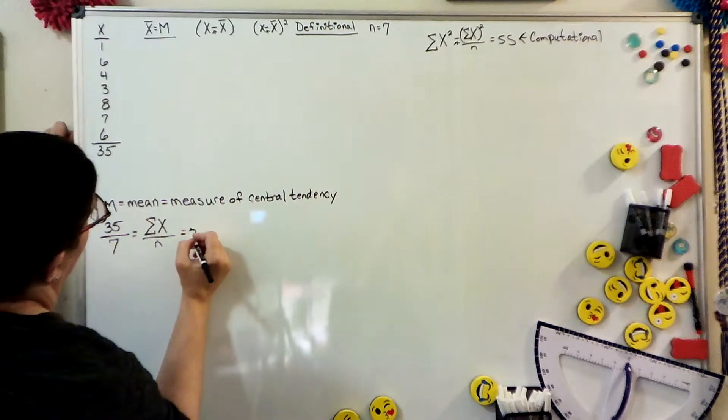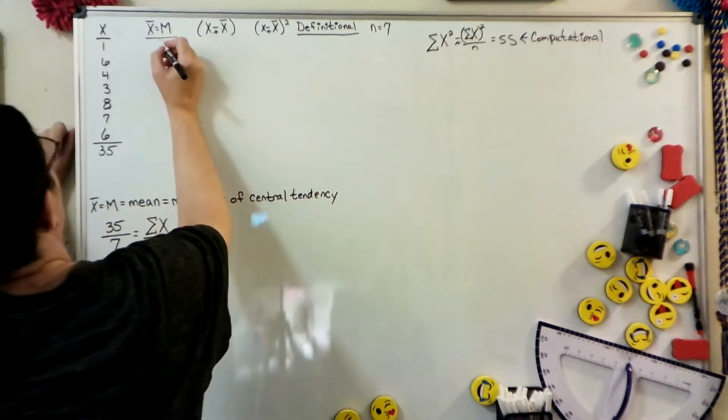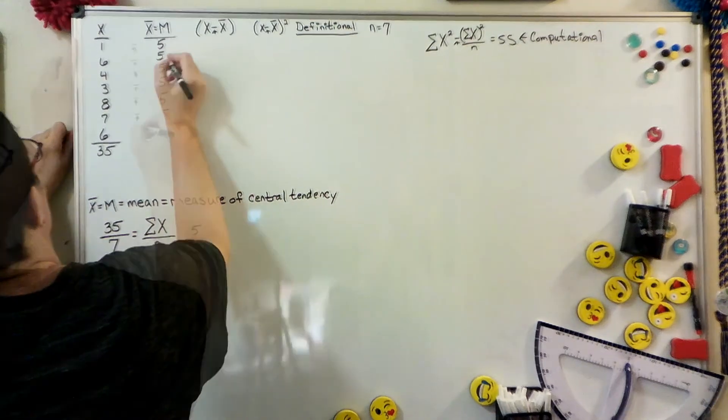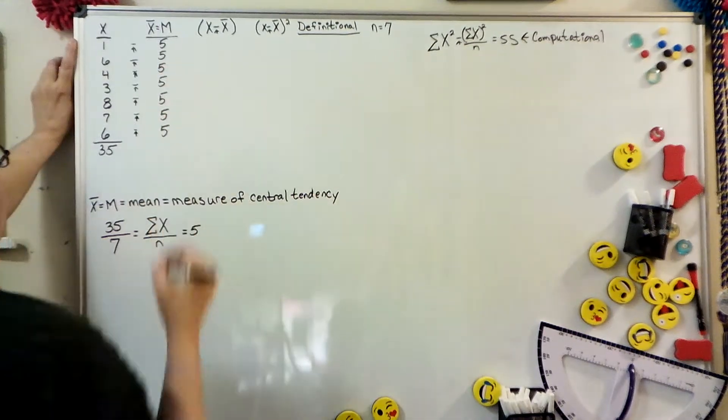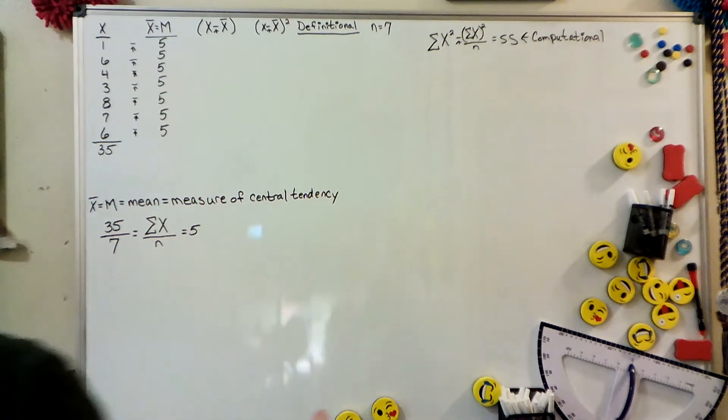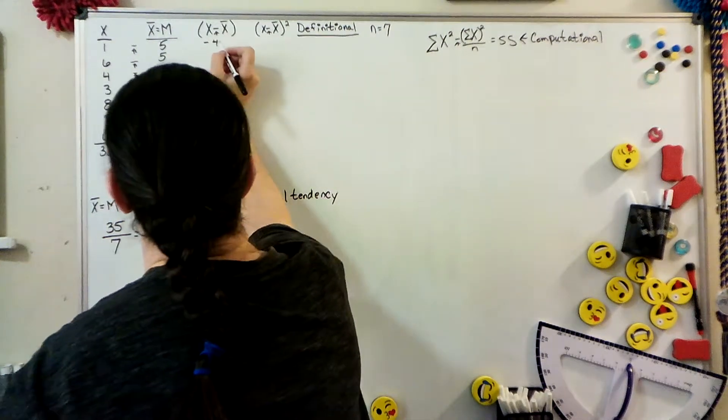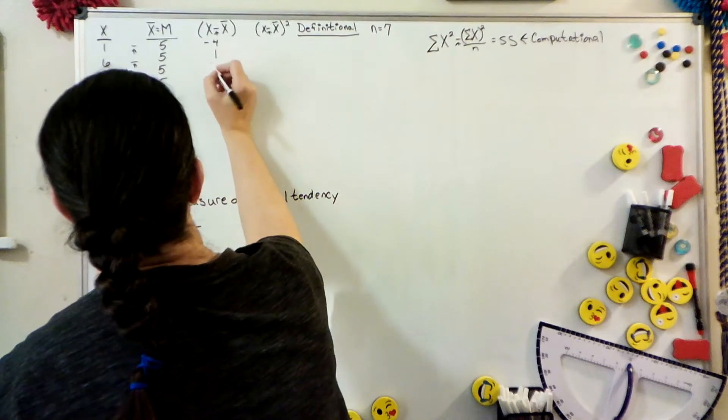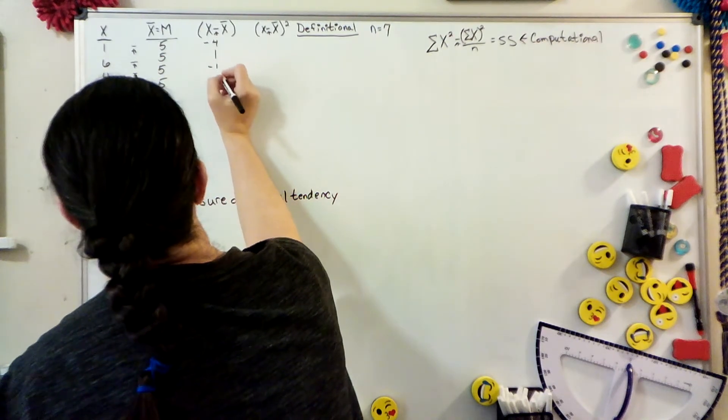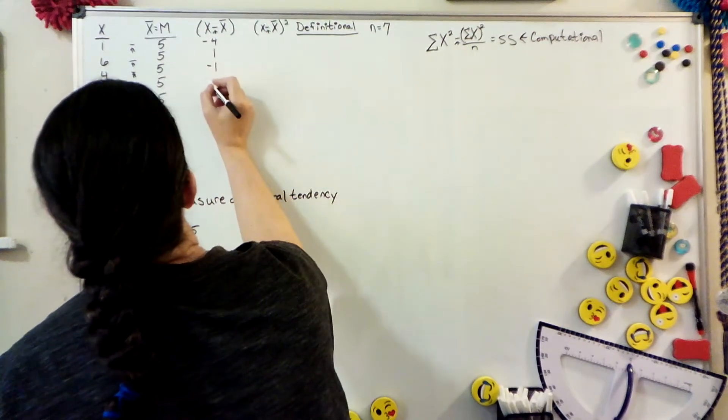The next thing we do is subtract the mean from each score. Those are negatives in there. Leave your negatives so that you can find out if you did it right or not. If you did it right, it should equal zero.